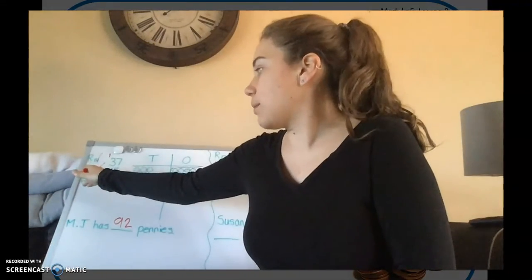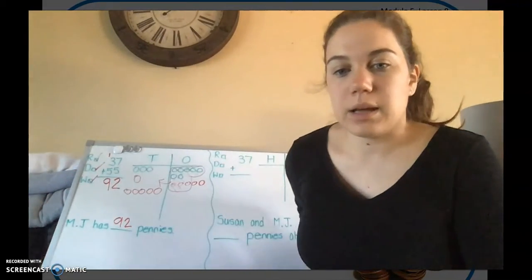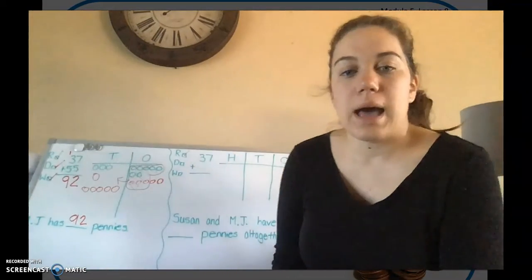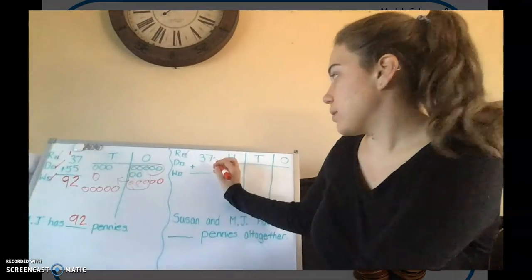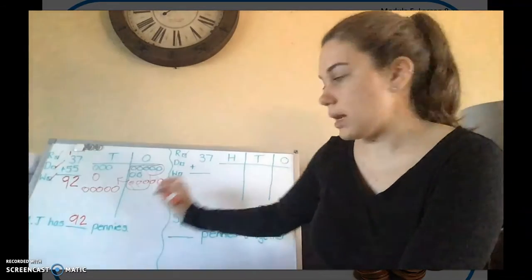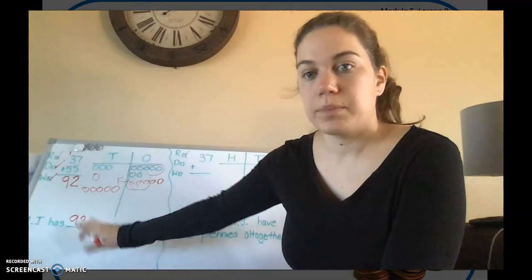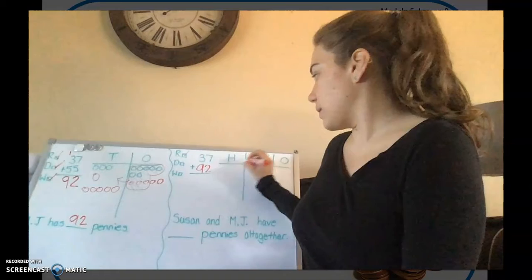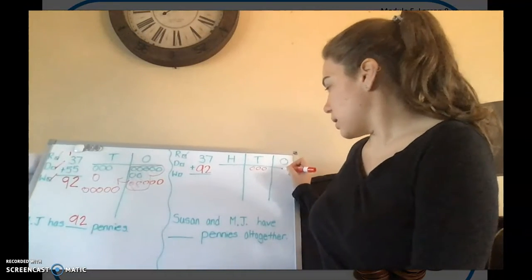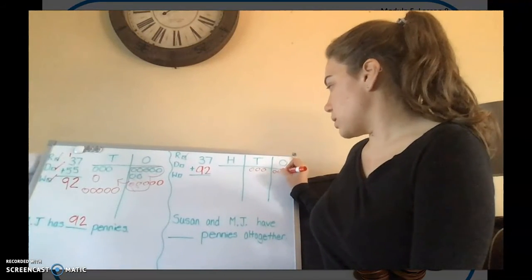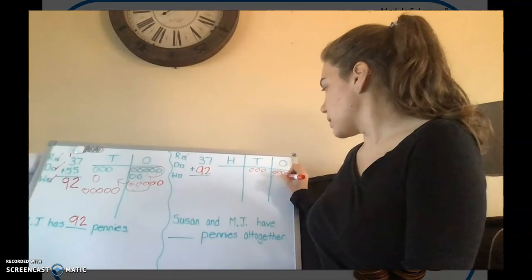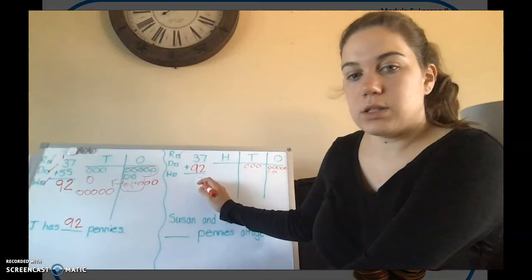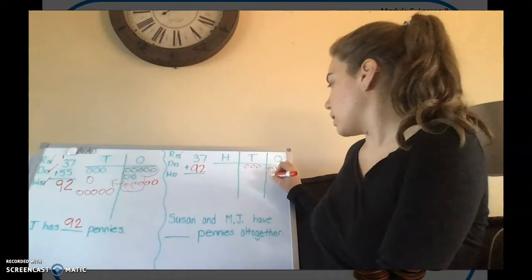So we've drawn our picture and we've written our sentence for that. Now we're going to come over here to this part where we've already read our problem. And now we need to find out how many MJ and Susan have all together. So we have Susan's 37 pennies. And how many did we say MJ had? Good. We figured out he has 92. So we're going to add 37. So 1, 2, 3 tens and 7 ones. And now we need to add our 92. So we're going to add 2 in our ones column first. We're going to add 2 ones.